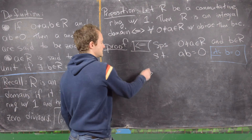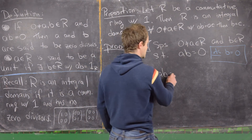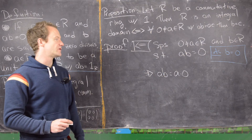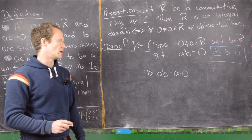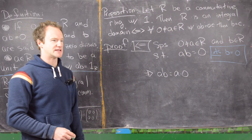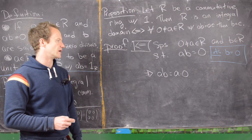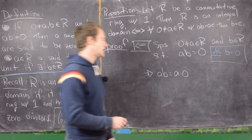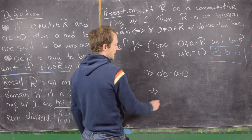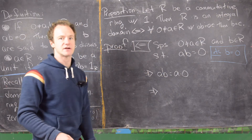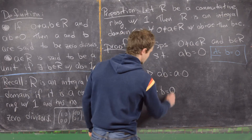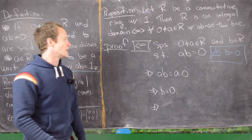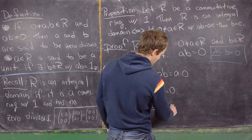Notice this implies AB equals A times zero. It's straightforward to prove A times zero equals zero for all A — a standard first exercise with rings. Now applying the rule that if AB equals AC then B equals C, we have AB equals AC with C equal to zero, which gives us B equals zero. By the definition of integral domain, this tells us R is an integral domain.